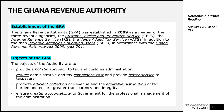The next objective is to reduce administrative and tax compliance costs and to provide better service to taxpayers. As we'll see, GRA has come a long way and has largely met this objective. The third objective was to promote efficient collection of revenue, the equitable distribution of the tax burden, and to ensure greater transparency, integrity, and accountability to government for the professional management of tax administration.